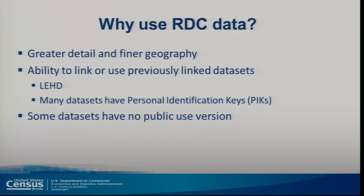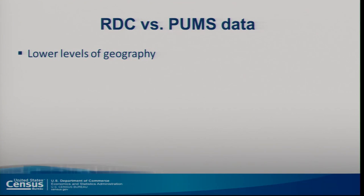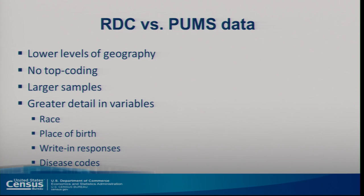Why would you want to use our data? We offer greater detail and finer geography — with our demographic data you can typically get down to the census block, as opposed to the PUMA level in the public use micro sample. You can also access datasets for which there is no public version, typical of our business datasets. And you can link external data with PII information to create individual-level links with our restricted data. Compared to PUMS, the RDC offers lower levels of geography, no top-coding, larger samples, greater detail in variables — more race categories, place of birth, write-in responses, and disease codes in the health data.